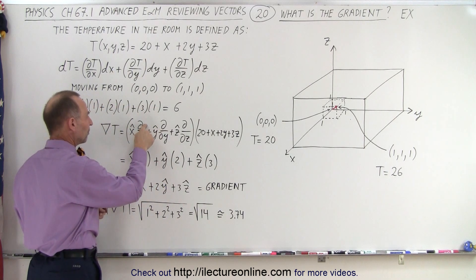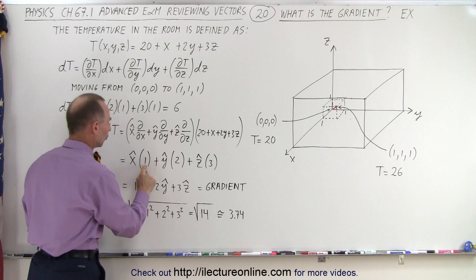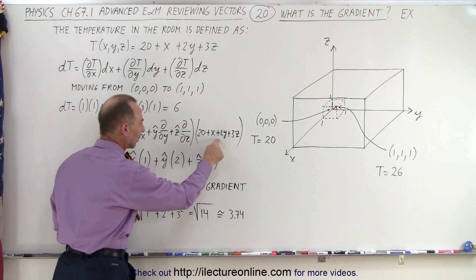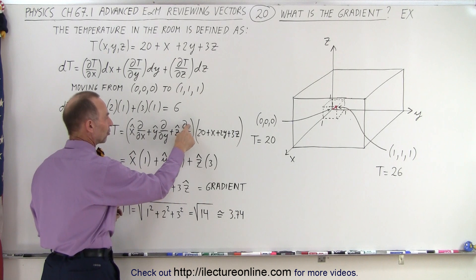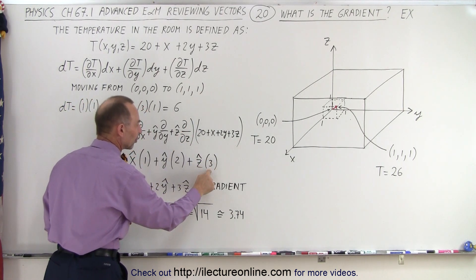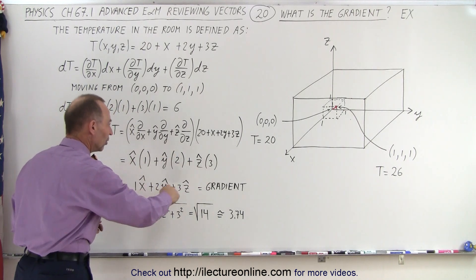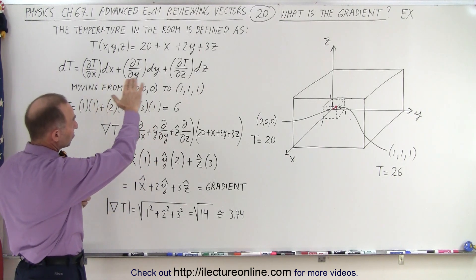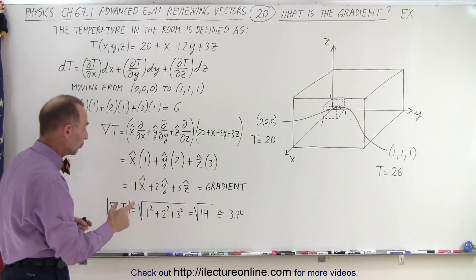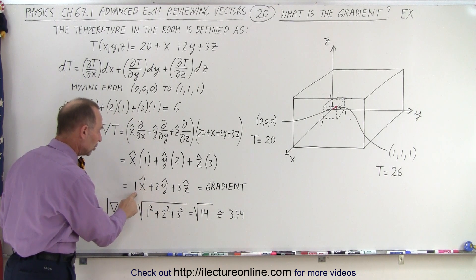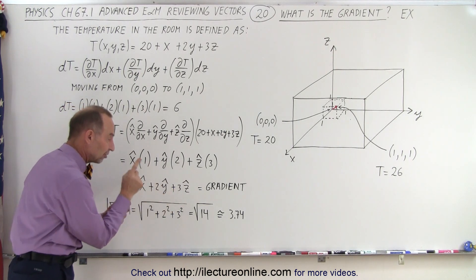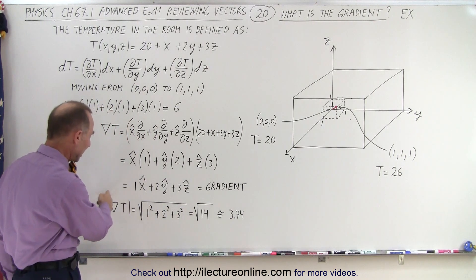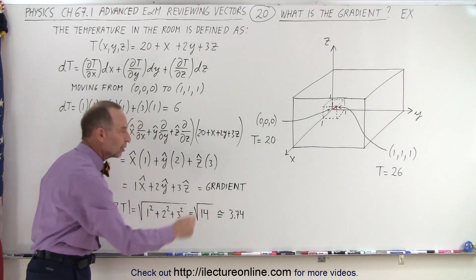When we apply the del operator, we take the partial derivative with respect to x of the entire function, which gives us 1, multiplied by the x-unit vector. We take the partial with respect to y, which gives us 2 times the y-unit vector. And the partial with respect to z gives us 3 times the z-unit vector. So the gradient vector is (1, 2, 3). The magnitude of that vector is approximately 3.74.